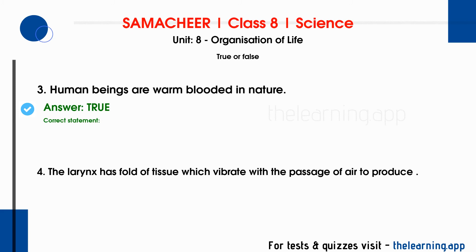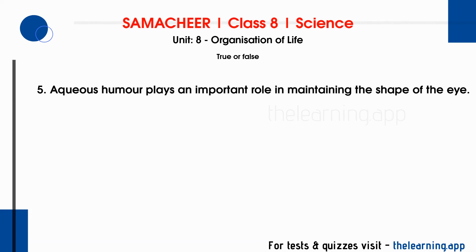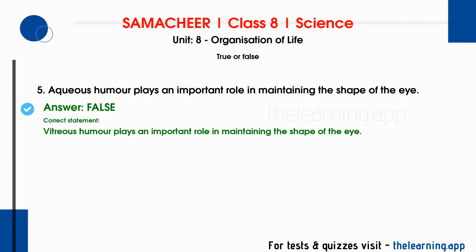Fourth question: The larynx has folds of tissue which vibrate with the passage of air to produce sound. This is true. When we inhale, air passes through the pharynx and trachea into the larynx, where the tissue folds vibrate to produce sound. Fifth question: Aqueous humor plays an important role in maintaining the shape of the eye. This is false. The correct statement is: Vitreous humor plays an important role in maintaining the shape of the eye.